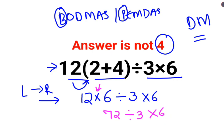So 72 when divided by 3 you get the answer as 24 multiplied by 6. Now 24 when multiplied by 6 gets you 144. So the answer for this question is supposed to be 144.